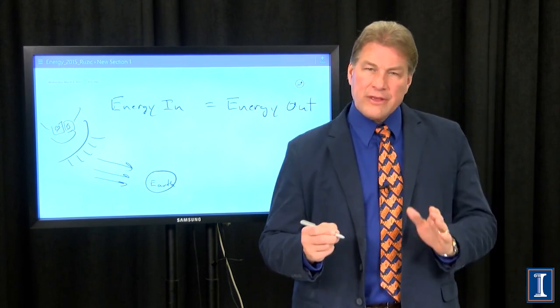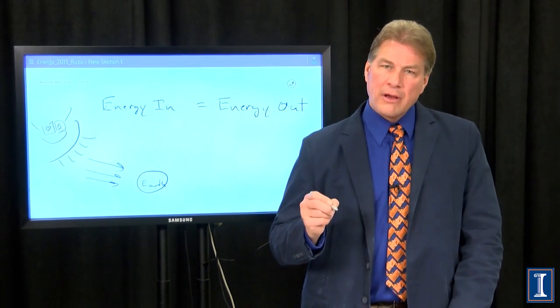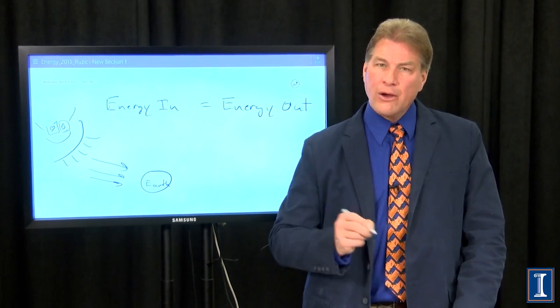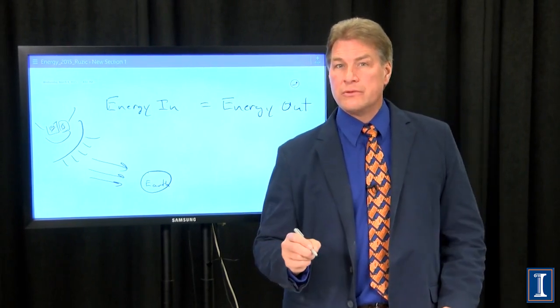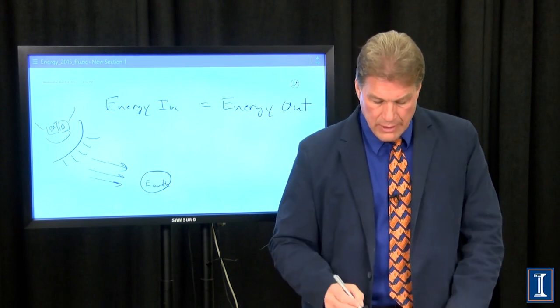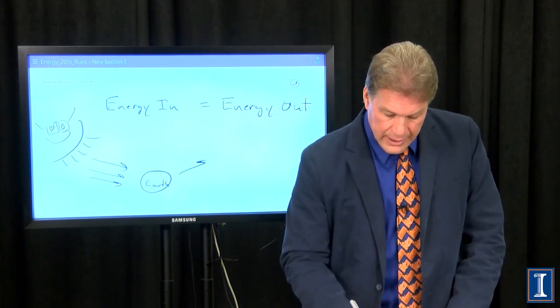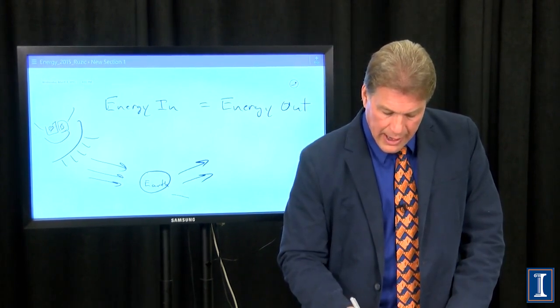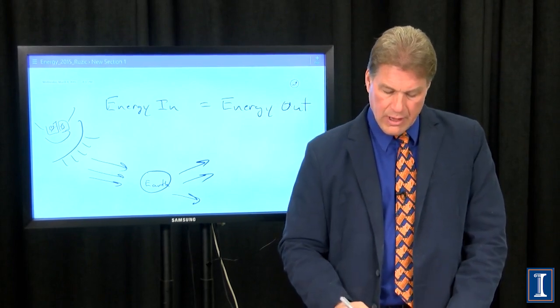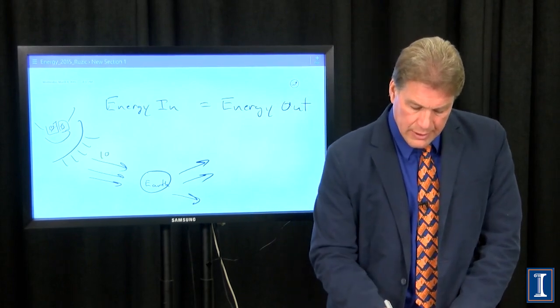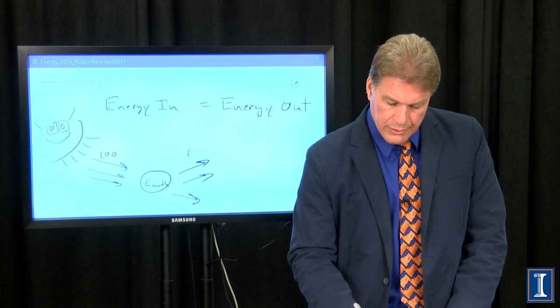Now, if the Earth were a rock, and only a rock, a dead rock, maybe like our moon, it would still radiate energy out. And if there was 100 units coming in, there are 100 units coming out.